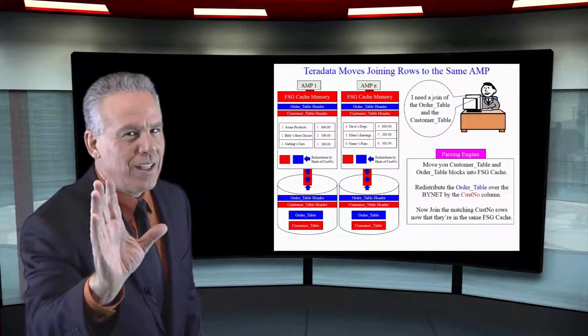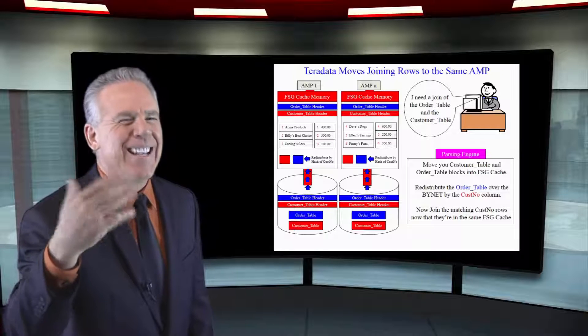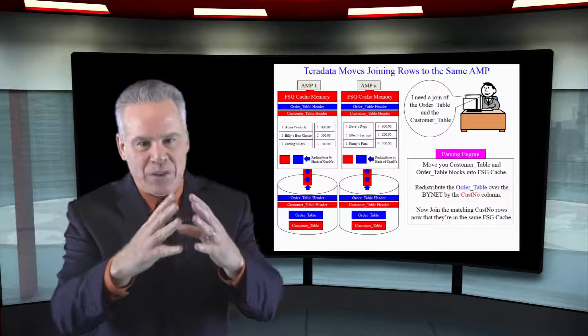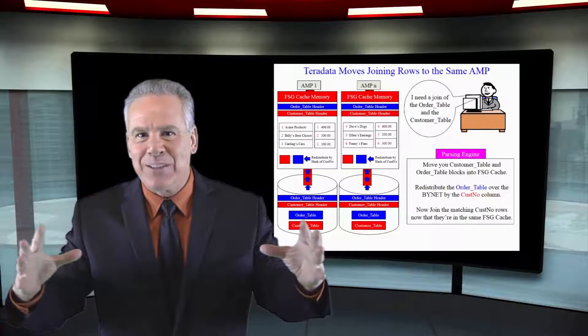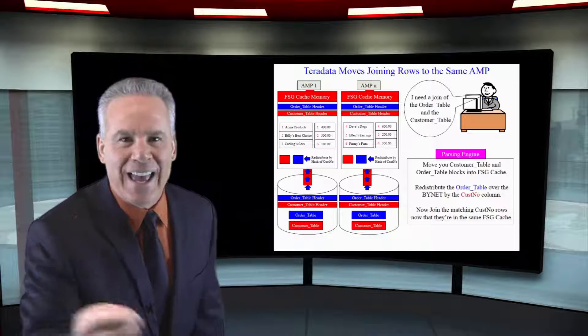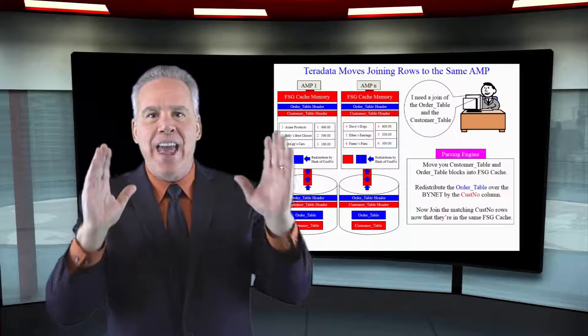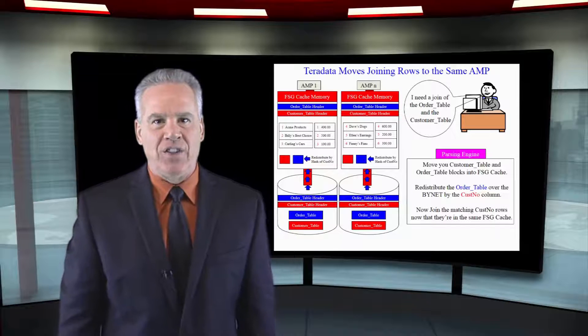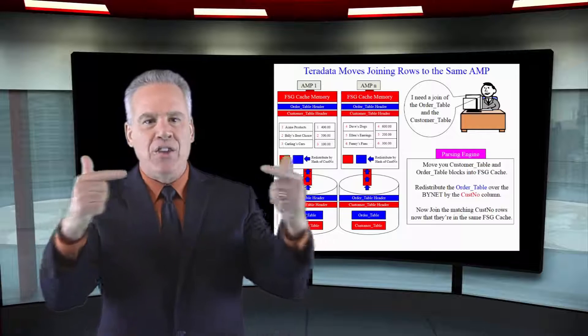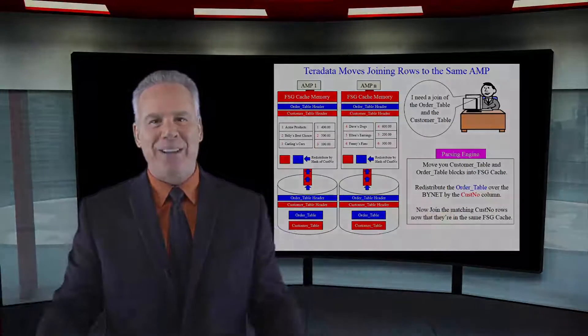This is really some very difficult work that takes a little time. Teradata does it very quickly, but that's what takes the most energy in these systems are the joins and the data movement across that binet. Once they're there and they go across the binet, everything matches up. And the parsing engine says, now do an all amps join step. And they just match and match and match on each amp. And the join is complete.